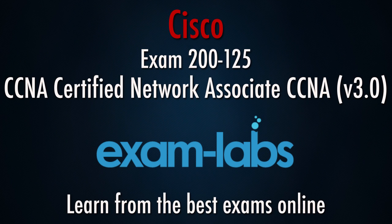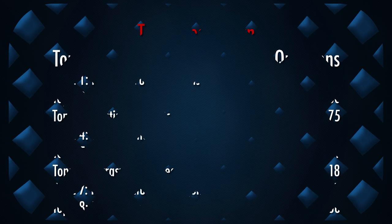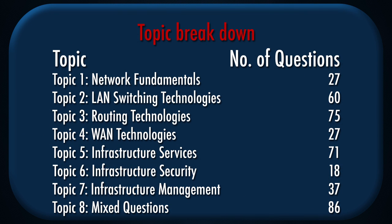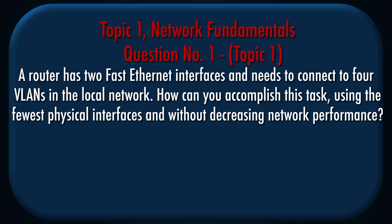Cisco CCNA Certified Network Associate Exam. Question Number 1, Topic 1. A router has two fast Ethernet interfaces and needs to connect to four VLANs in the local network. How can you accomplish this task using the fewest physical interfaces and without decreasing network performance?